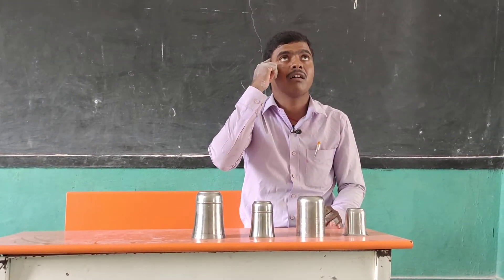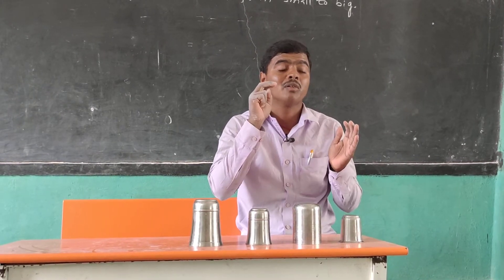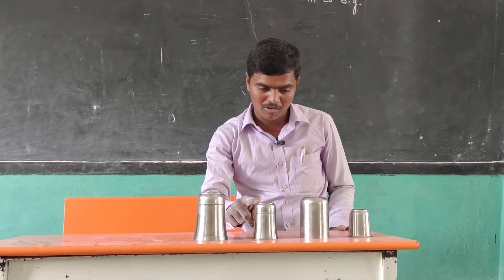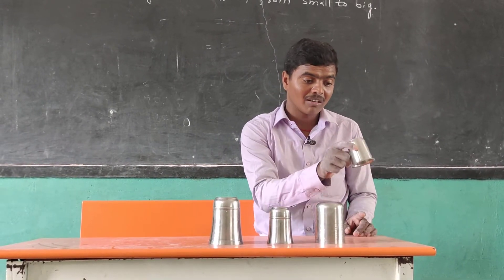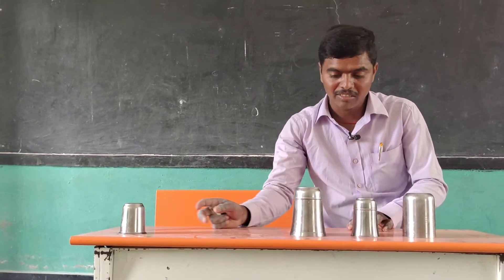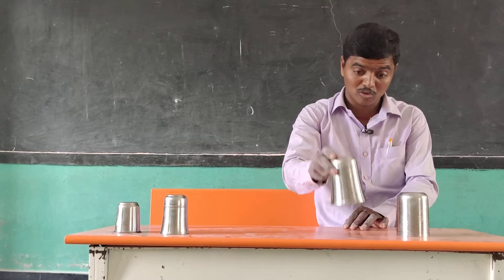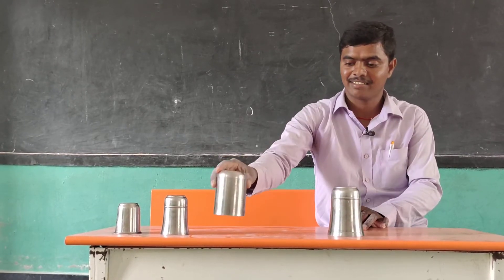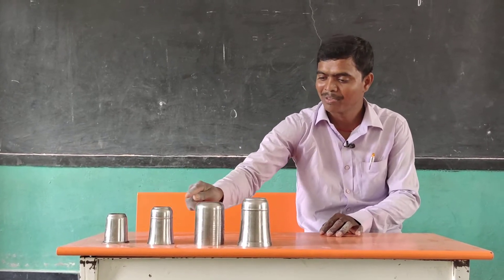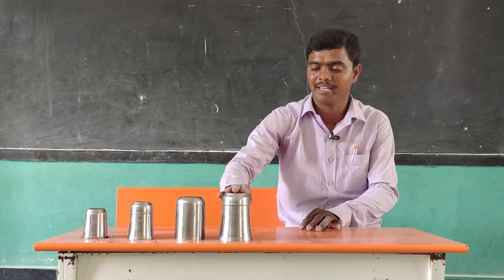Here is big, here is small, here is big, here is small. So the smallest glass comes first in ascending order, because ascending order means small to big. Second, third, fourth glasses are placed in increasing size. This is called ascending order — small to big, increasing order.